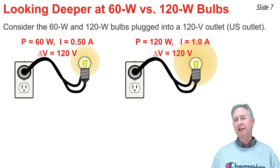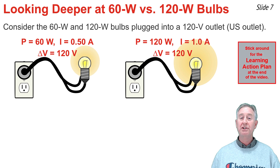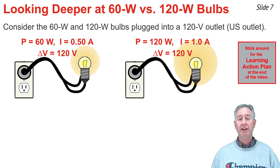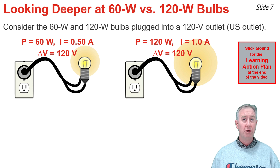Now I'd like to look a little deeper at the 60-watt and 120-watt bulbs. What I currently know is that delta V is 120 volts for each — assuming a U.S. outlet — and the current is 0.5 amps for the 60-watt and 1.0 amps for the 120-watt.